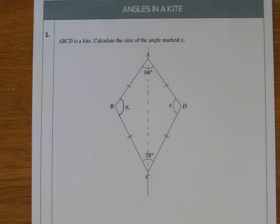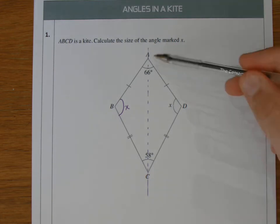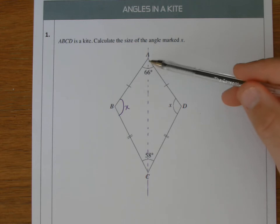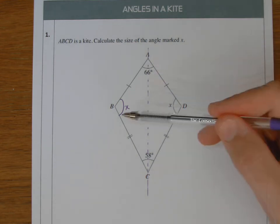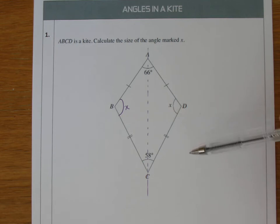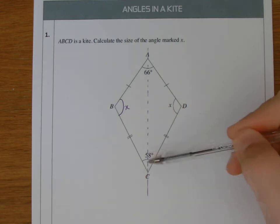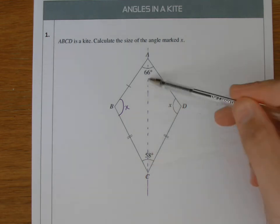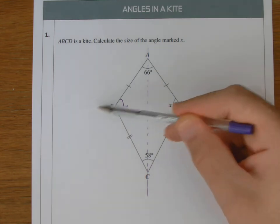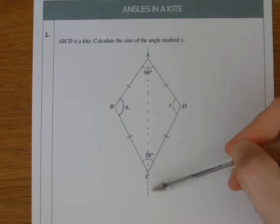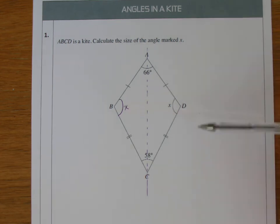Now what's really good about this idea is because we know that a kite has got a line of symmetry going through here, and that this angle is always the same as this angle, what we can do then is look at the other two angles. Now obviously they're not going to be the same. They won't be the same because there isn't a line of symmetry going this way. There's only one line of symmetry, so it's only these two that are the same.